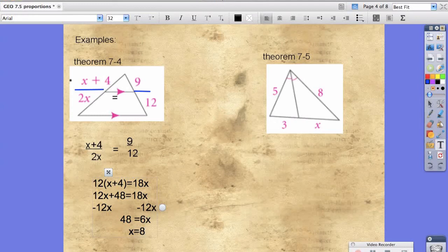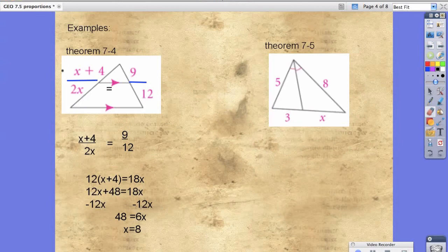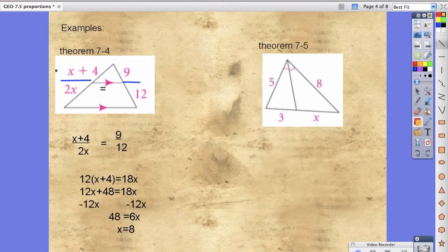The second example is based off of theorem 7.5. Now notice how this line segment in blue bisects that angle.